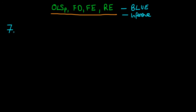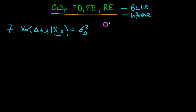The seventh assumption we require is that the variance of the first difference of the idiosyncratic error u_it, given our vector of independent variables at any time period S including where S equals T, has to be equal to some constant. That's our homoskedasticity assumption. This is going to be important only for first differences, because it's only in first differences where we actually come across terms like this first difference in the idiosyncratic error.